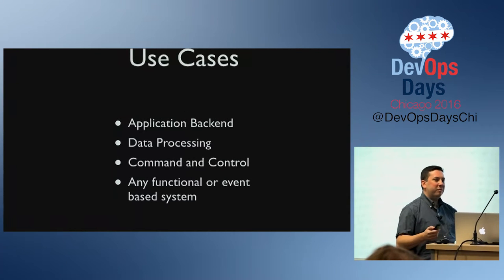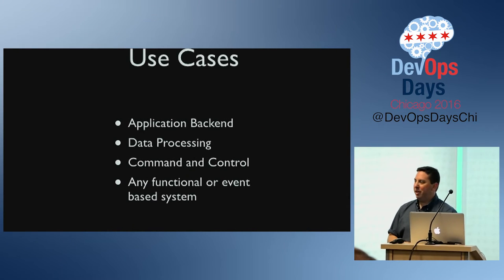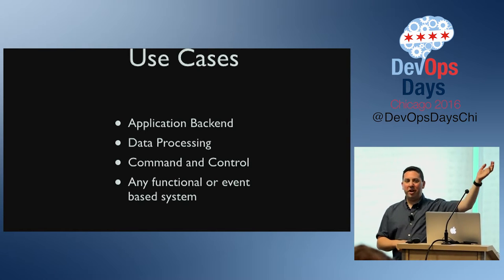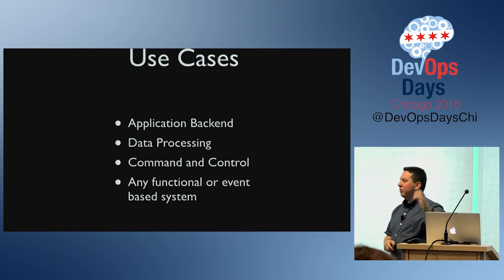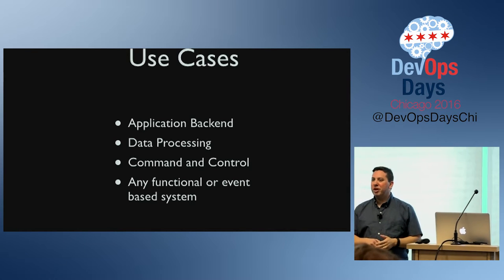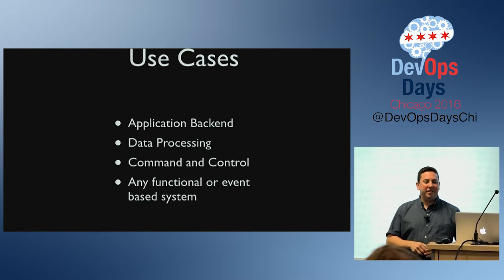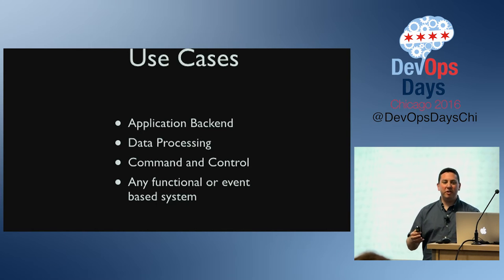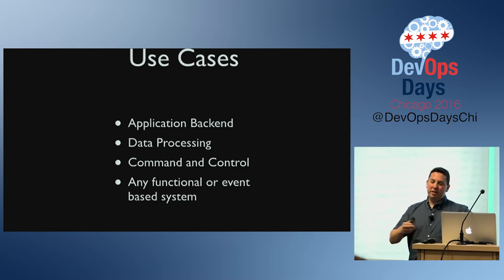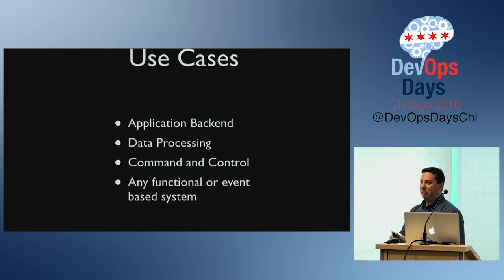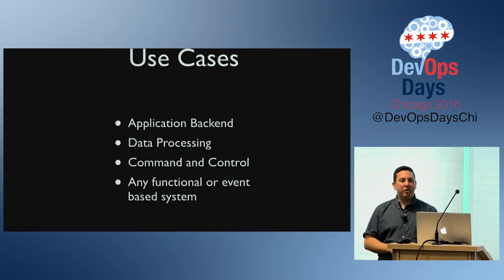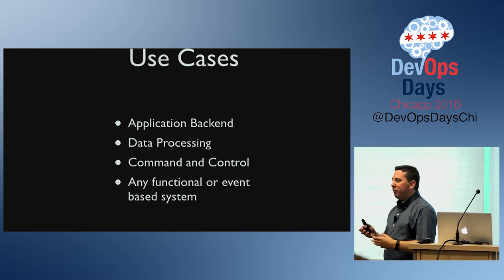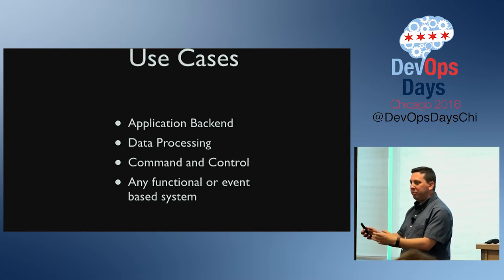Let me throw out a few use cases that might convince you that using Lambda or something like it makes sense. Some good use cases for serverless are the application backend, data processing, and pretty much any time you have one of those tool boxes — a server where you run all those little scripts on a cron job. Those are all perfect use cases for something like Lambda or serverless.